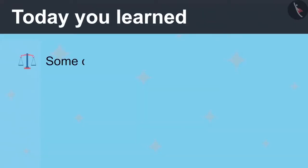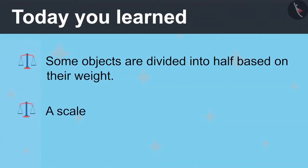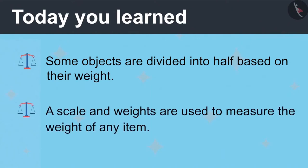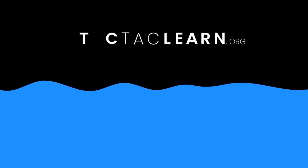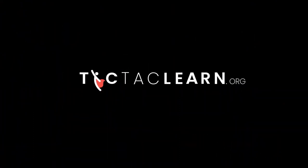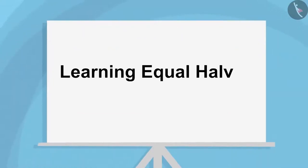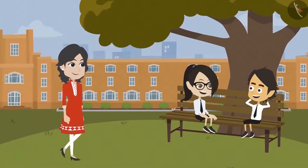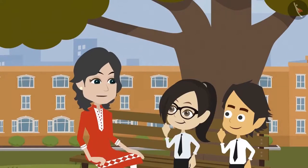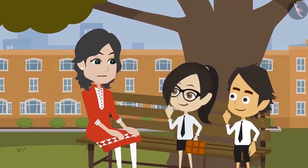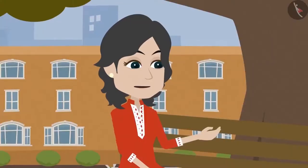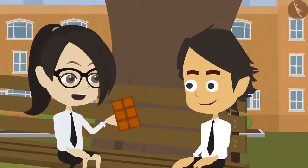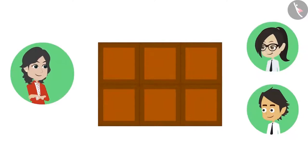Today you learned that some objects are divided into half based on their weight. A scale and weights are used to measure the weight of any item. Today we will learn that things can be divided into half in a number of ways. Hello, madam. Hello, Vandana and Ayushman. Today I have got chocolates for both of you. Here you go. Thank you, madam. I have got only one chocolate for both of you — you both divide this chocolate into half.